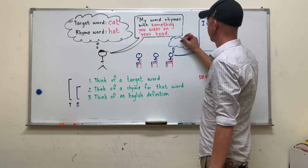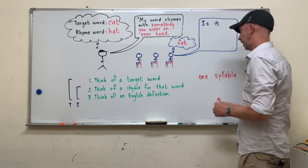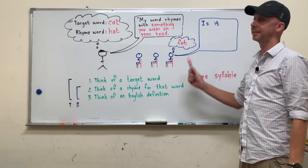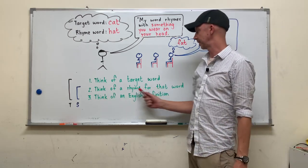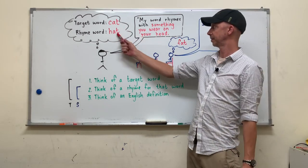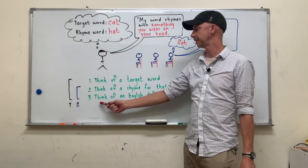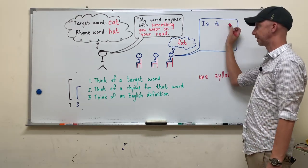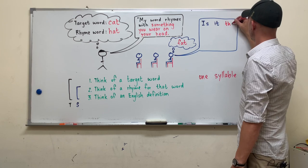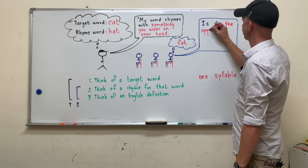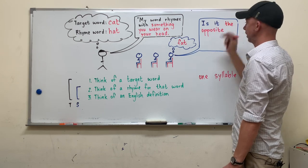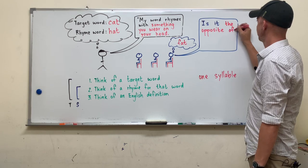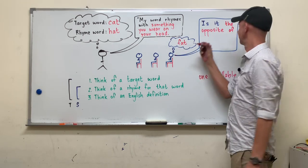So maybe this student thinks of the word fat. He or she can't say, is it fat? They can't do that. They need to think of a word that rhymes with what I told them. And then they need to think of an English definition for that word. To guess, you need to give an English definition. Is it the opposite of thin? Maybe that's what he says.